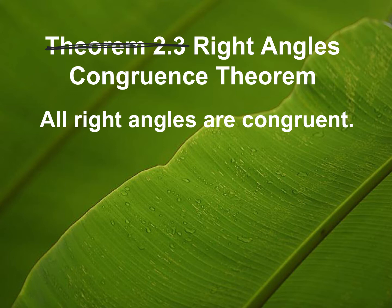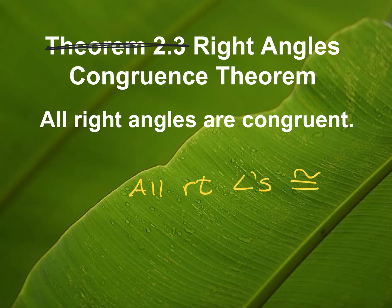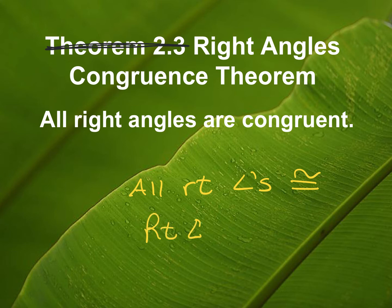The name is almost as long as what it says. If you want to abbreviate it when putting it as a reason in your proof, you could abbreviate it as 'all RT angles congruent' using the little angle symbol. Or you could abbreviate the name as 'RT Angles Congruence THM.' Or just write everything out — but don't ever tell me the number.